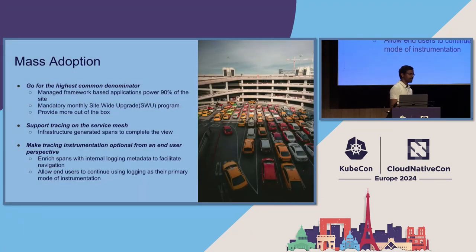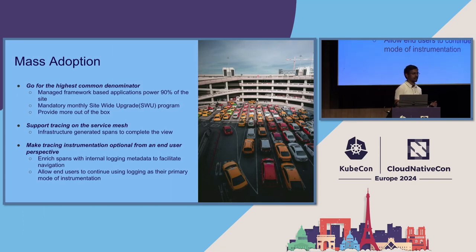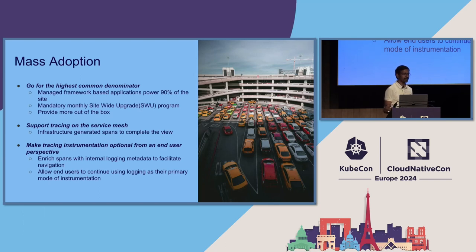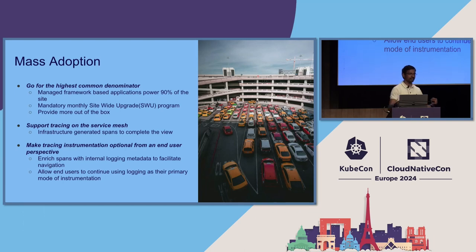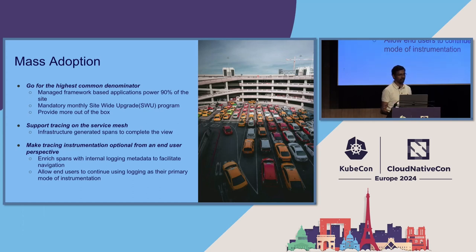Mass adoption. The first thing we did was to go for the highest common denominator. 90% of all the applications deployed inside of eBay use the managed framework, which means we can ship instrumentation through the managed framework and immediately get 90% adoption of tracing inside the company. We have a monthly mandatory site-wide upgrade where every application on the managed framework automatically gets upgraded to the most recent versions of their dependencies — any instrumentation updates have a one-month turnaround time to reach all ~8,000 applications.